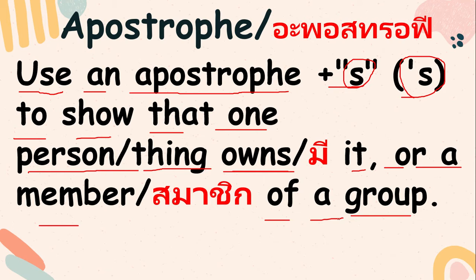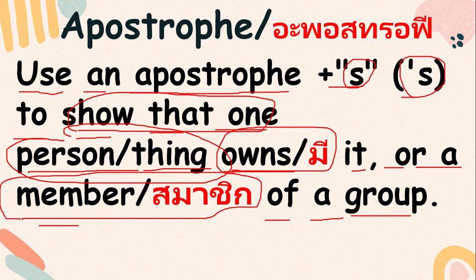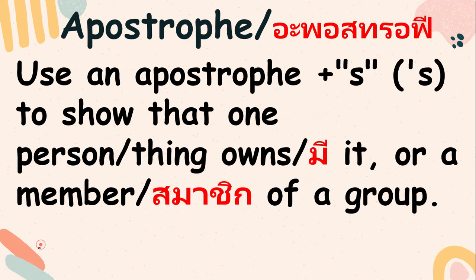For example, I have a pen and you will say, 'This is Teacher Harriet's pen.' It shows that one person or thing owns it or is a member of a group. If Teacher Harriet is a member of a group, we say 'Teacher Harriet's a member of Siamit group.' That's an example.